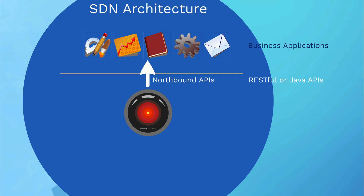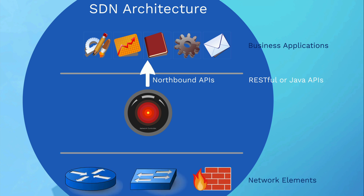using RESTful or Java APIs. APIs are basically application programming interfaces — an intermediary piece of software that allows two different software components to talk to each other. At the bottom, we have the network elements: routers, switches, firewalls, and so on.